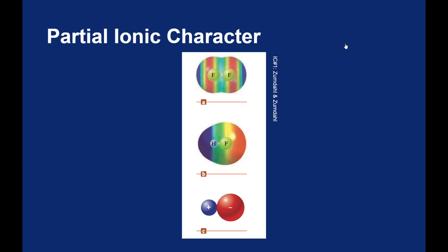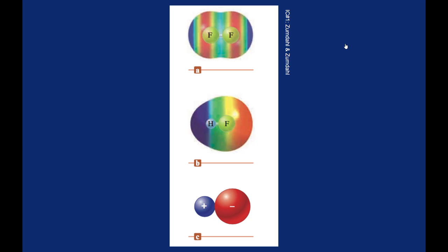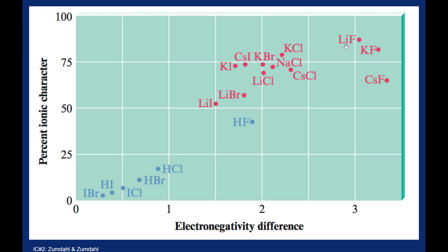The textbook shows a measurement called partial ionic character, showing you how ionic a bond is on a scale. If you have very little ionic character, that would be the purely covalent bond. If you have very high ionic character, then you would be a fully ionic bond. This gives us two different ways to denote whether a bond is polar covalent, purely covalent, or ionic.